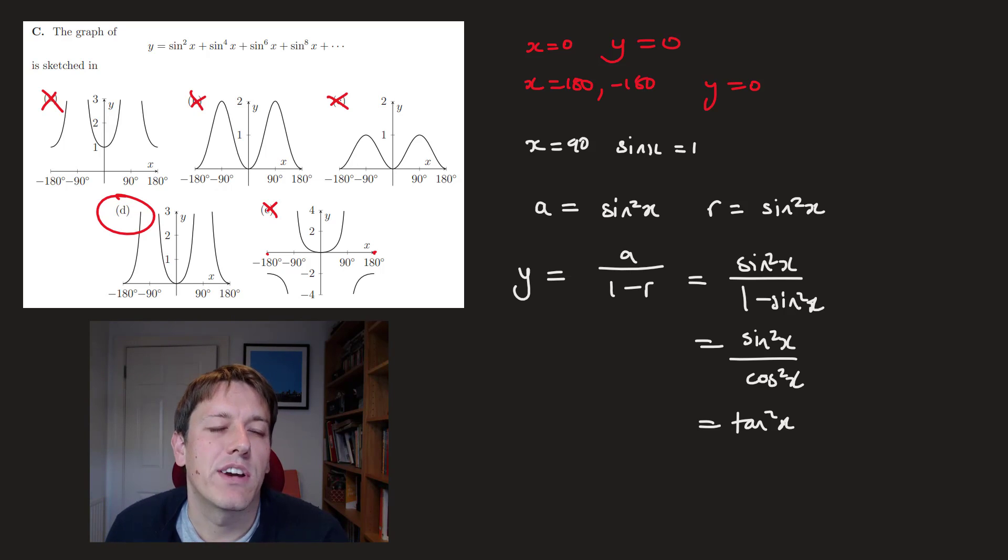So you can now just think about the graph of tan and decide which of these graphs is sensibly that squared. Obviously, the slight subtlety with the geometric progression here is that we do need the common ratio to be less than 1. So this step is valid only for those values where sine x is, well, the modulus of sine x is strictly less than 1. So technically, this step is not valid at 90 degrees and minus 90 degrees. And in fact, we can see it's exactly at those points where the graph is going to be undefined as well. Exactly those points we thought about a second ago where the sum is going to be infinite.